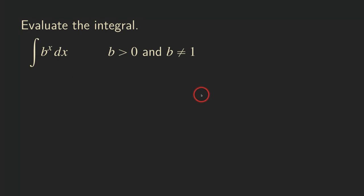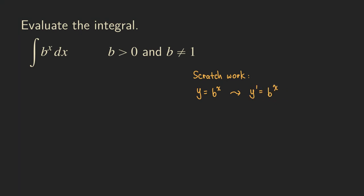Let's think about that with some scratch work. We actually know how to take the derivative of the exponential function that's not base e. This is more general than the natural exponential function, so it also includes the base e case. Let's say you have a function y equals b to the x — what is its derivative? If the requirements for b are satisfied, the derivative is b to the x times ln of b, the natural log of the base.